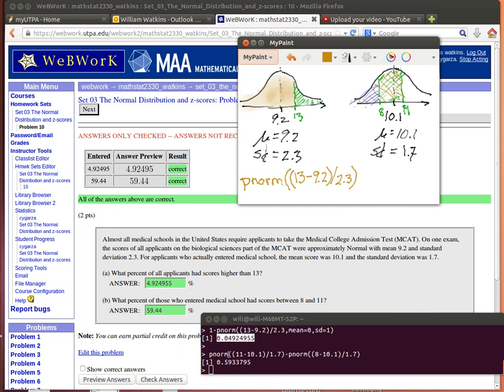So if we took the P-norm of 11 minus 10.1 divided by 1.7, the P-norm of the z-score for 11, that would tell us that brown area.